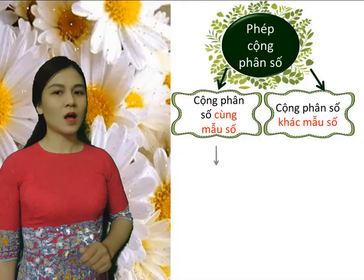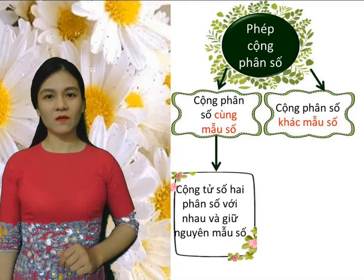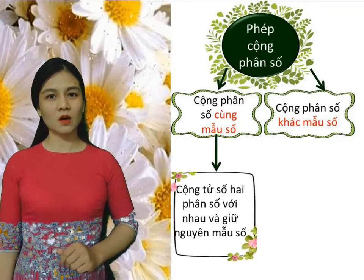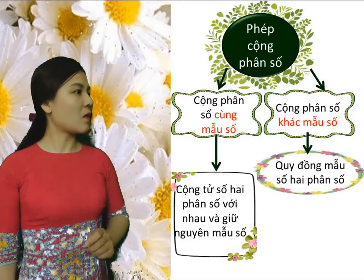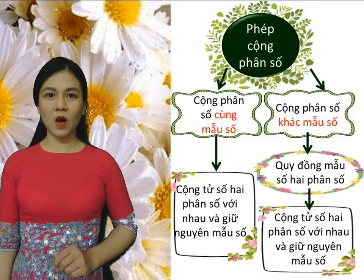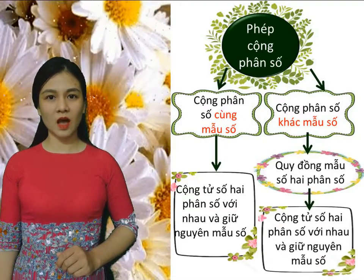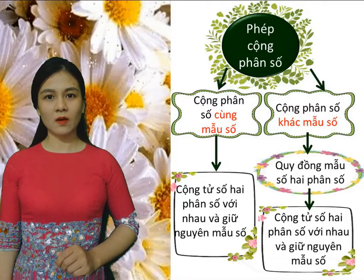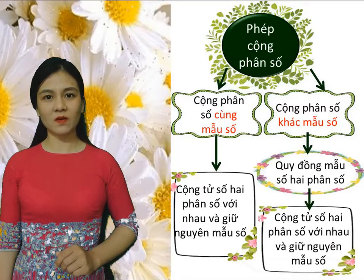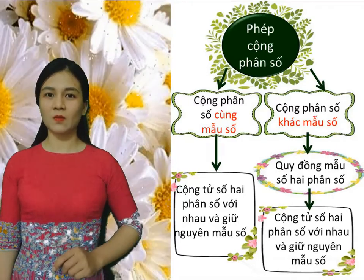Đối với cộng phân số cùng mẫu, ta thực hiện cộng tử số với nhau và giữ nguyên mẫu số. Còn đối với cộng 2 phân số khác mẫu số, ta thực hiện thêm bước nữa, đó là quy đồng mẫu số để chuyển về dạng cộng 2 phân số cùng mẫu, rồi cộng tử số lại với nhau và giữ nguyên mẫu số.